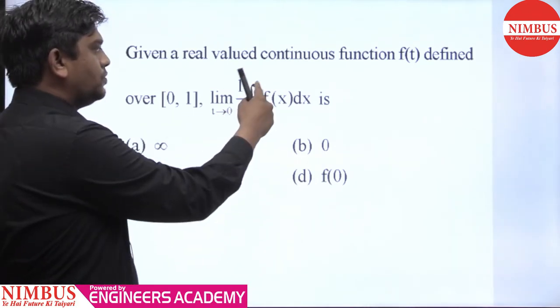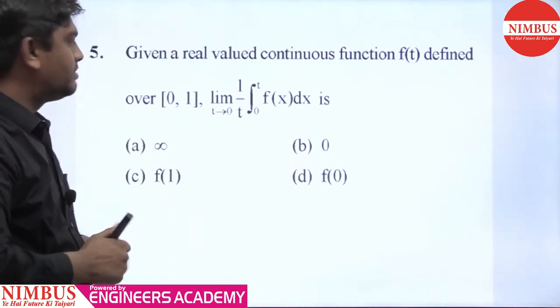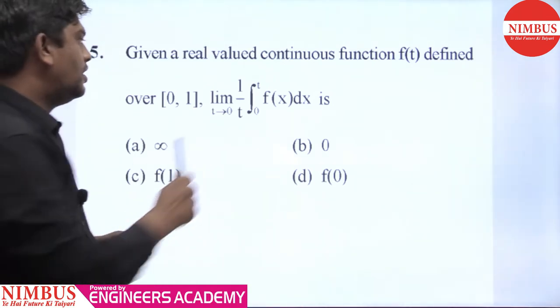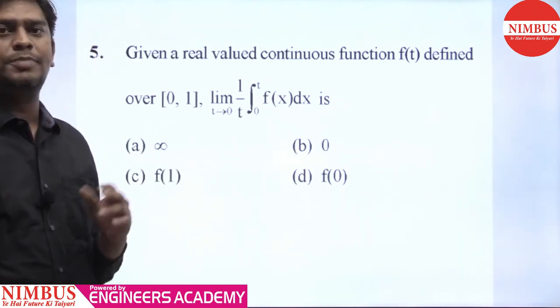If I put t equals 0, then the upper limit is 0, and the lower limit and upper limit are the same. What will be the integration value? Zero. The integration value is 0. Here we have 0 upon 0 form.